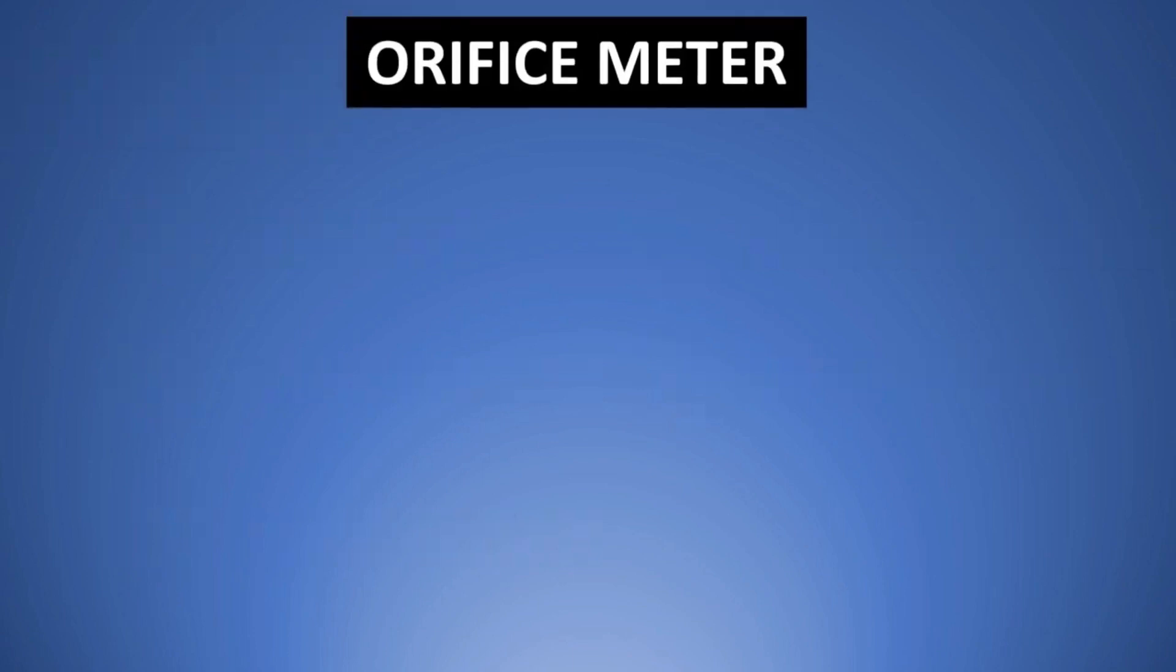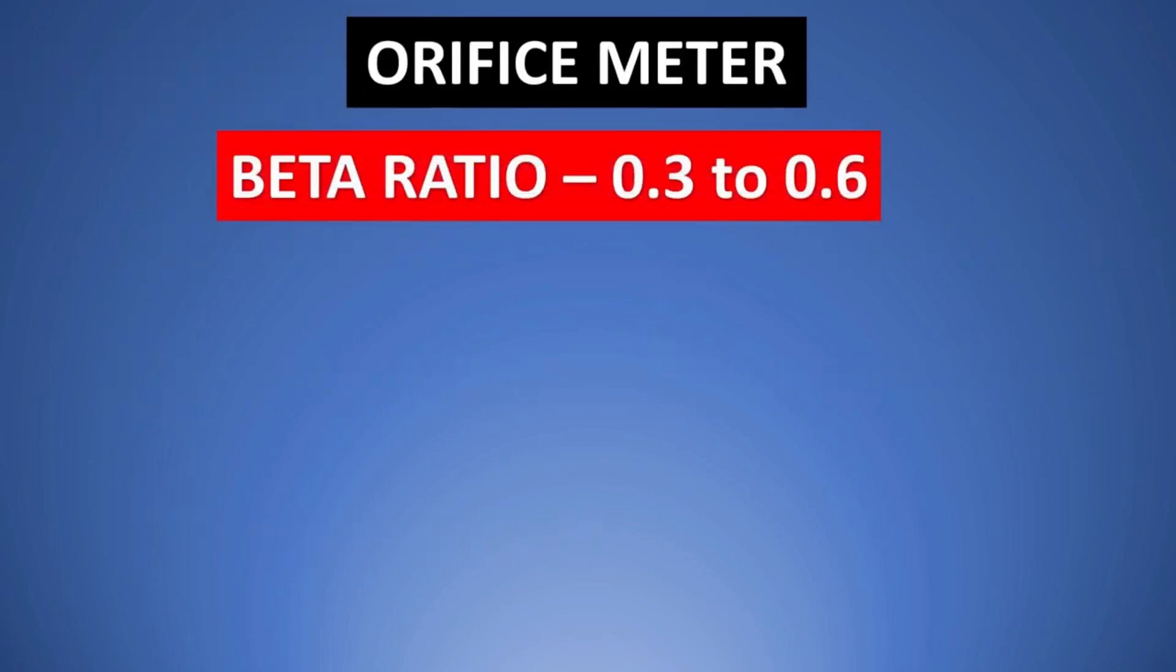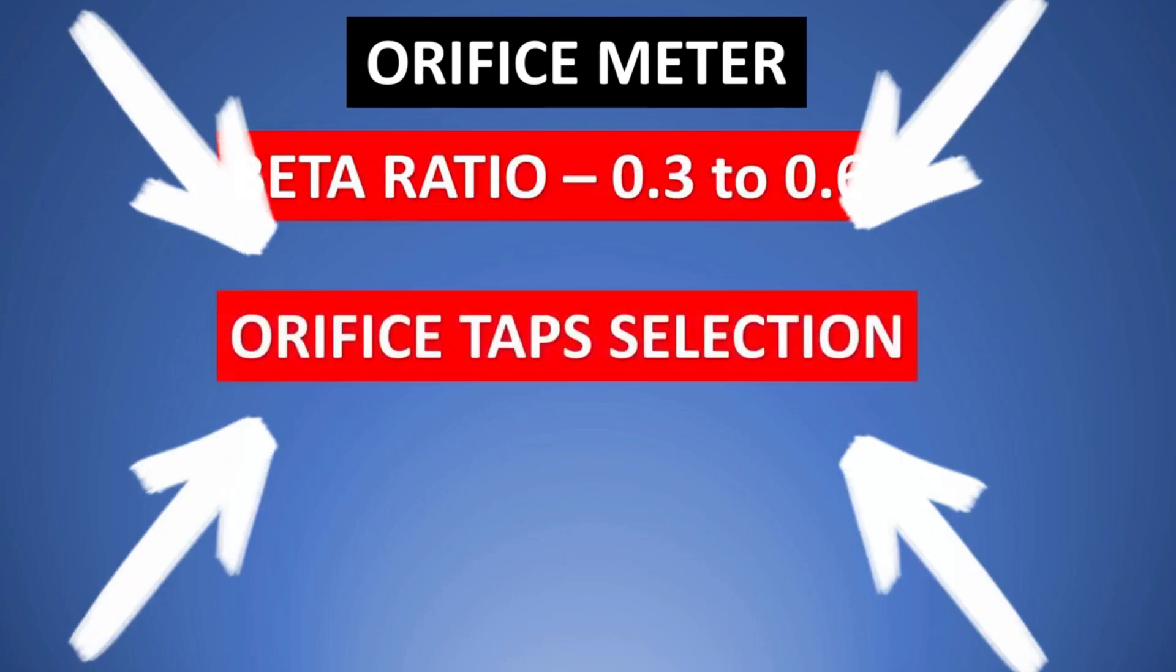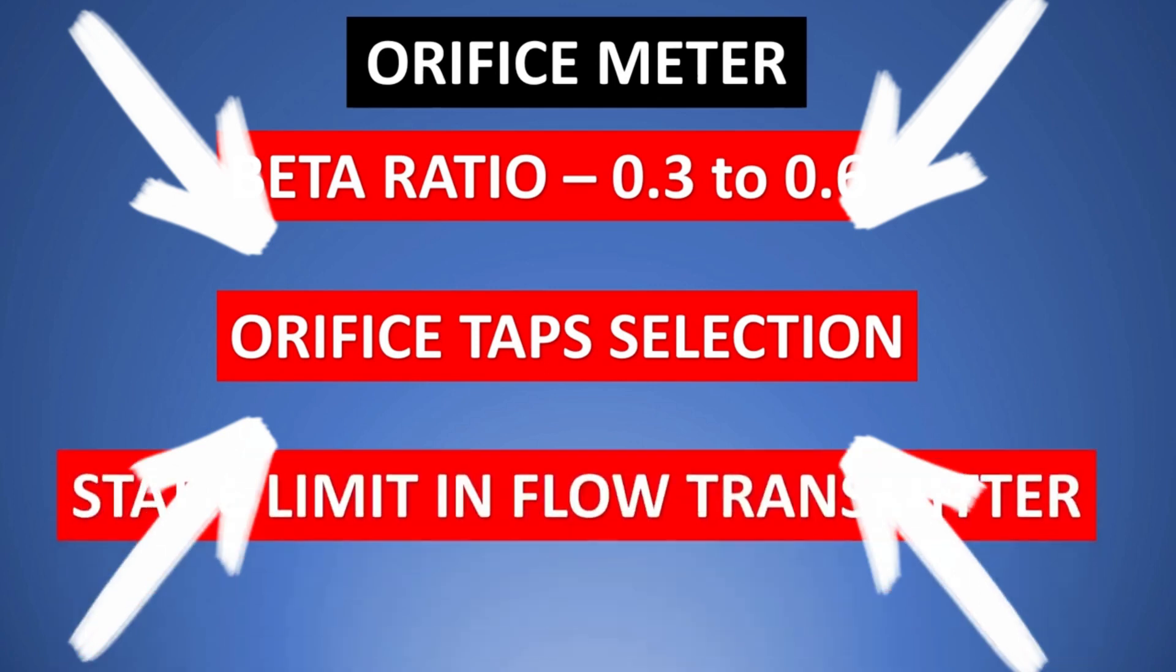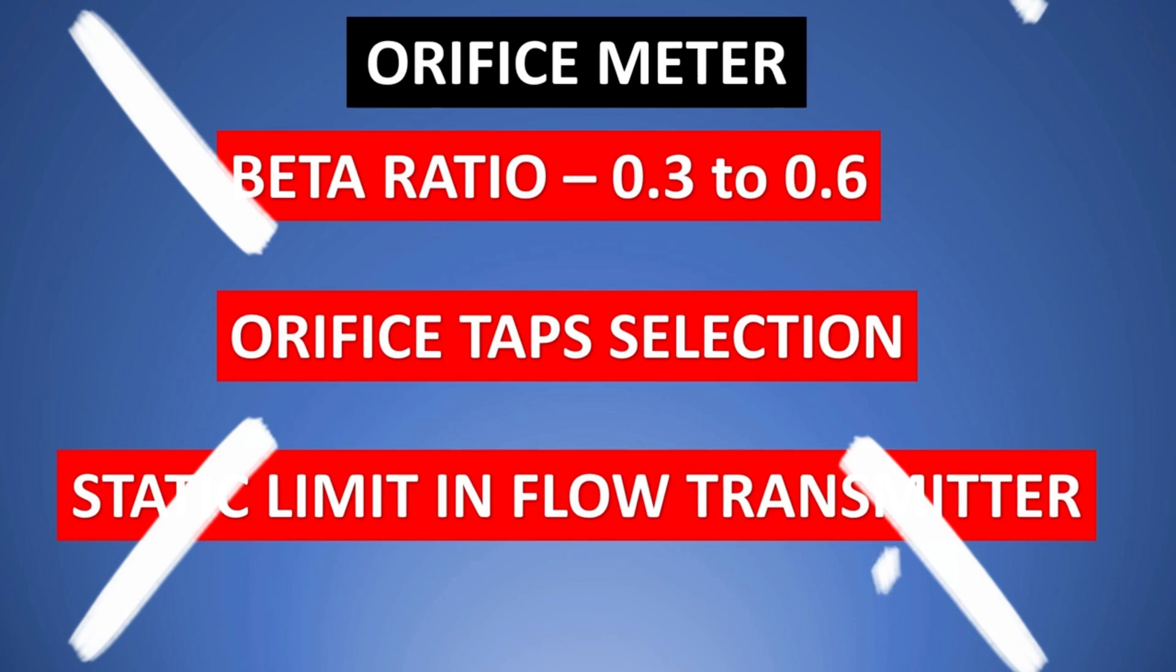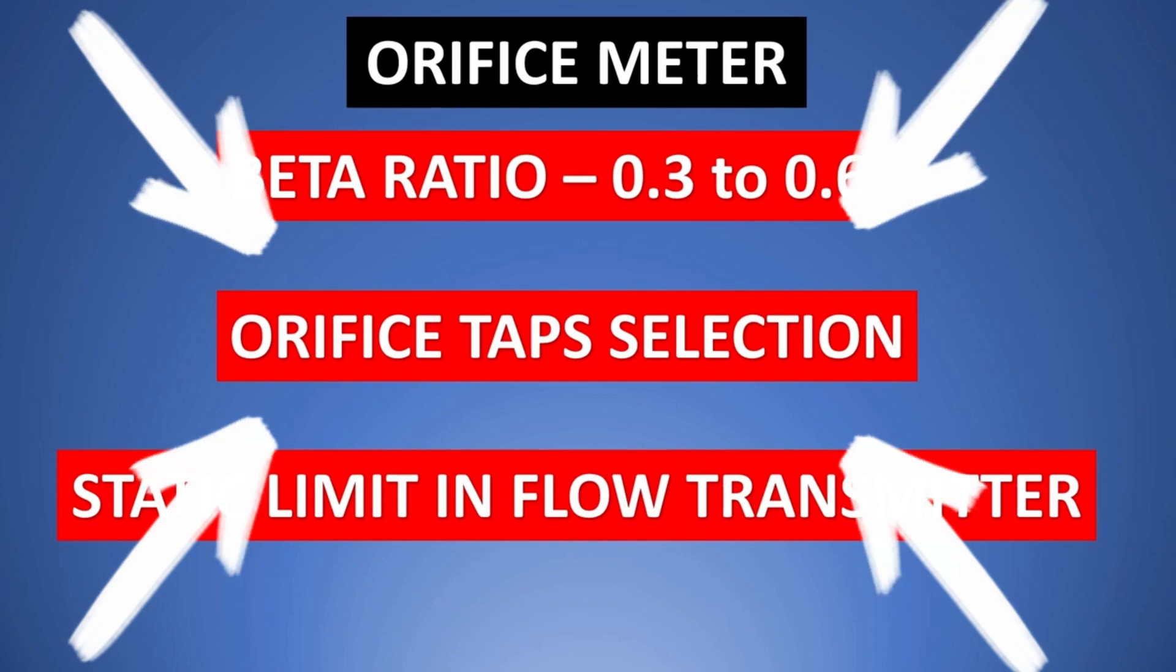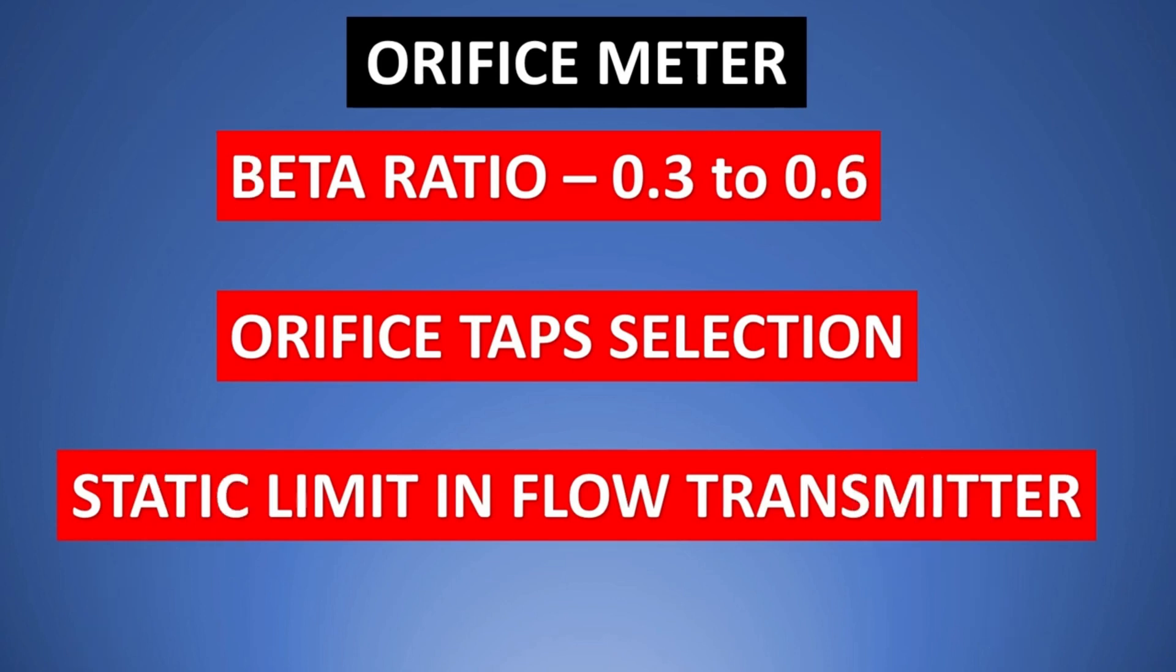Finally, for orifice flow meters, if you want to learn about why is the beta ratio between 0.3 to 0.6 or how do you select the tappings for various things like integral orifice, flange tappings, etc., or why is there static limit in transmitter, this playlist here is going to be very helpful to you. It covers all of these amazing things of orifice flow meters. Thank you and please let me know what other videos you want to see in the comment section and we will try to come and bring them together in next Saturday. Thank you and have a great day ahead.